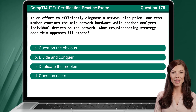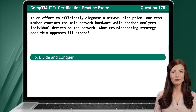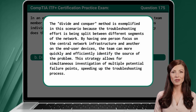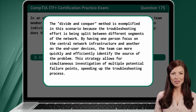Question 175: In an effort to efficiently diagnose a network disruption, one team member examines the main network hardware while another analyzes individual devices on the network. What troubleshooting strategy does this approach illustrate? The answer is B, divide and conquer. The divide and conquer method is exemplified here because the troubleshooting effort is split between different segments of the network. By having one person focus on the central network infrastructure and another on end-user devices, the team can more quickly and efficiently identify the source of the problem, allowing simultaneous investigation of multiple potential failure points.